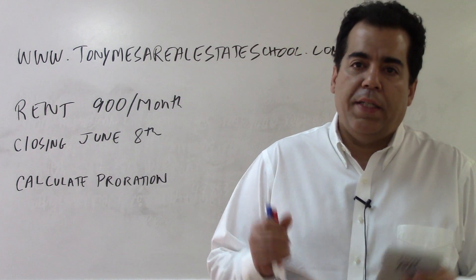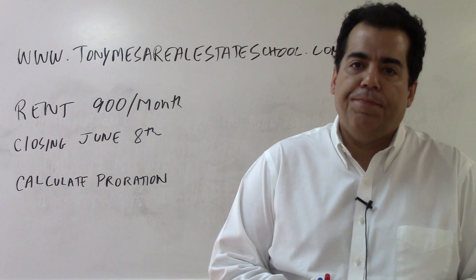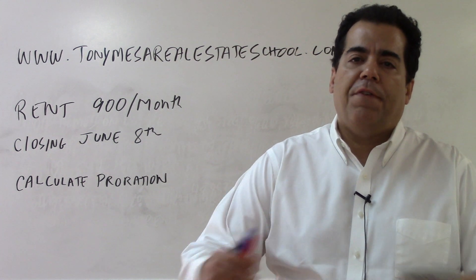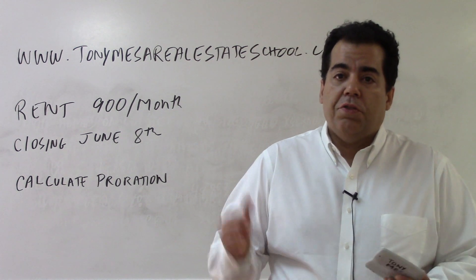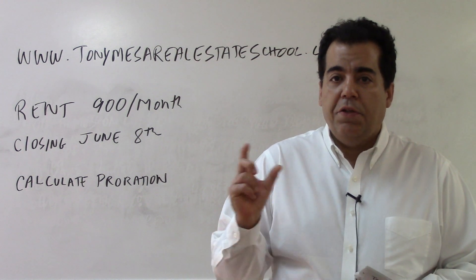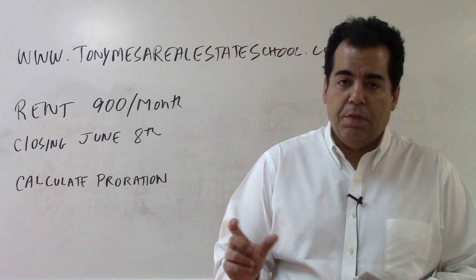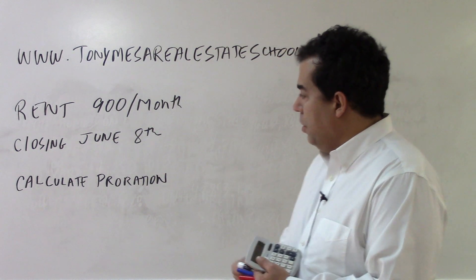It's when the property that is being sold is a rental property. It could be a single-family house being rented out, it could be a duplex, it could be a 500 unit apartment building. The idea is that there's rent which is being paid by the tenants, and at the closing you have to do a calculation called a proration to adjust things fairly between the seller and the buyer.